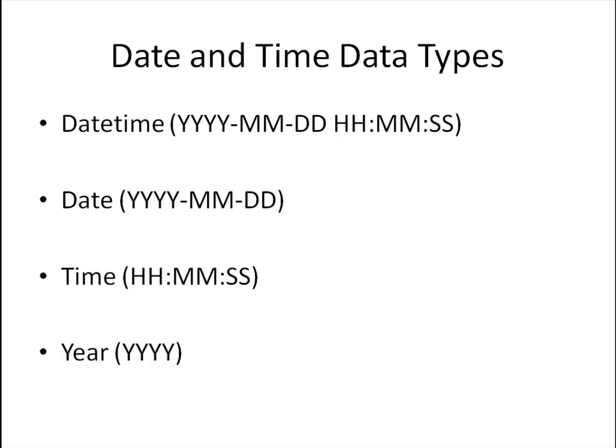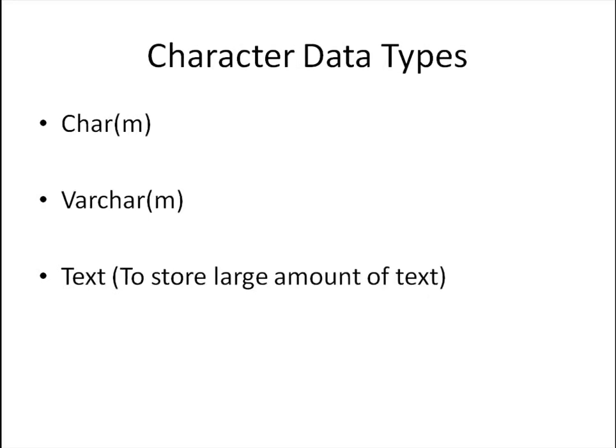Then you've got the DATE data type, which is pretty much like DATETIME just minus the time part. You've got the TIME data type, which is the same as DATETIME minus the date part. And then you've also got the YEAR data type, which holds only a year value — so if you're storing values like 2005, 2007, or 2013, you can use this data type.